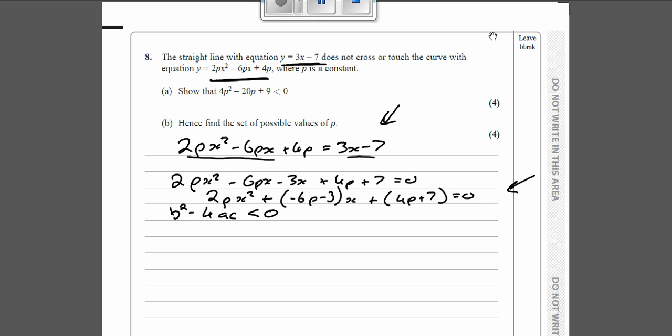So we're now going to do b² - 4ac is less than 0, where a is 2p, b is this minus 6p minus 3, and c is this 4p plus 7.